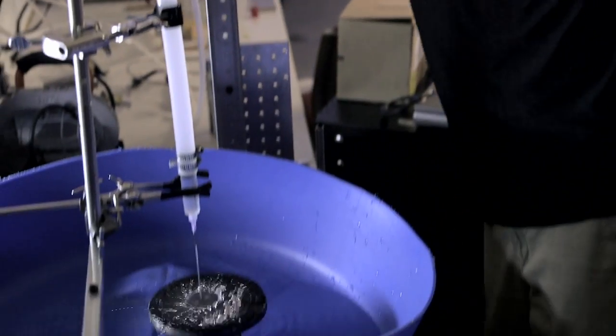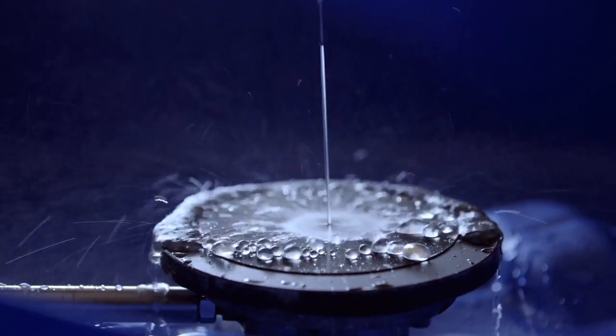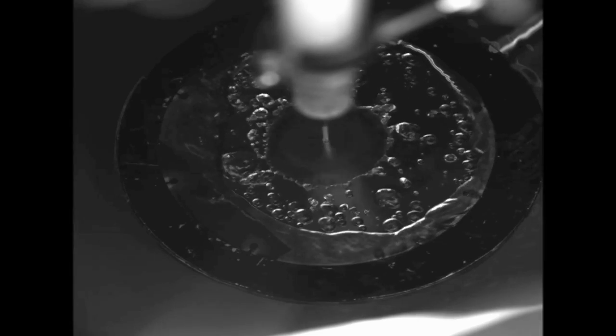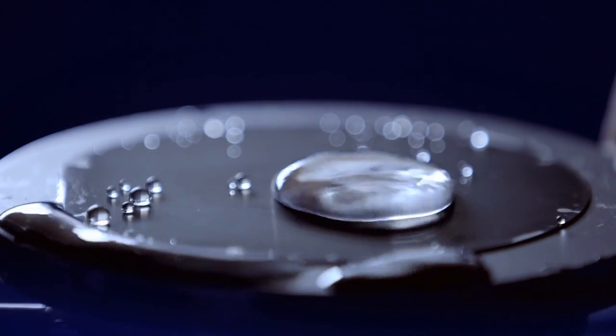Here we can see the water jet coming down and hitting the super hydrophobic surface. As soon as it hits it, the water starts to move outward. But because the water is much more attracted to itself than the actual super hydrophobic surface, it starts to create droplets. Water basically just rolls right off of it.